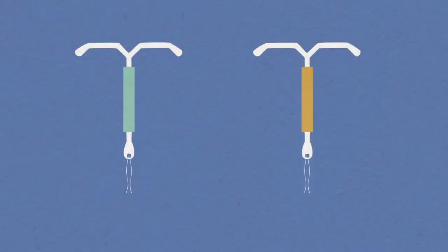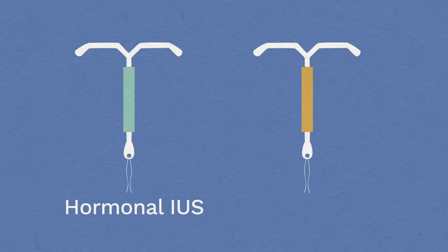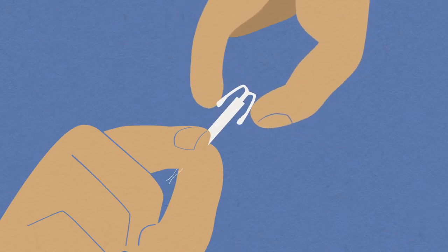There are two types. The hormonal intrauterine system, or IUS, and the copper intrauterine device, or IUD. Both are small and flexible, with two threads at one end.